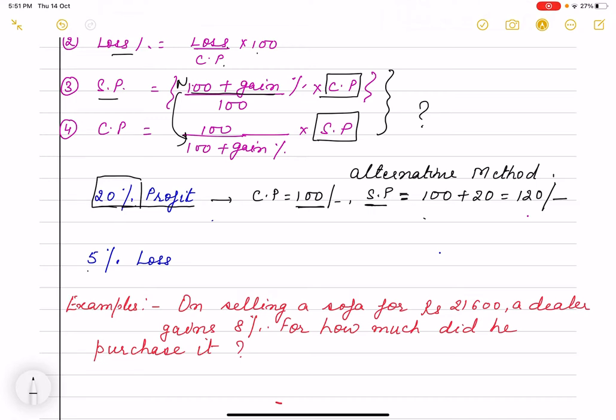Same way if I have 5 percent loss that means what? If my CP is 100, because I am taking about percent so percent is out of 100. So if my cost price is 100 rupees and I have 5 percent loss, that means my SP is 95 rupees. That means 5 percent loss.